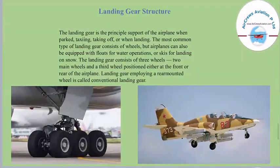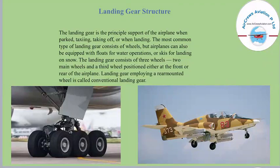The landing gear is the principal support of the airplane when parked, taxiing, taking off, or landing. The most common type consists of wheels, but airplanes can also be equipped with floats for water operations or skis for landing on snow. Landing gear consists of three wheels — two main wheels and a third wheel positioned either at the front or rear of the airplane. Gear employing a rear-mounted wheel is called conventional landing gear.